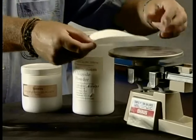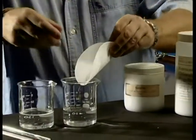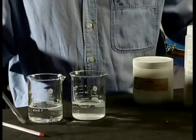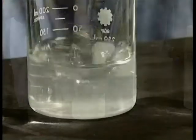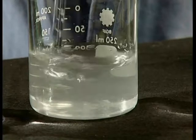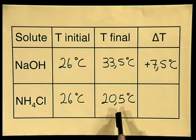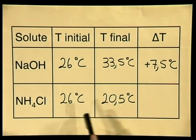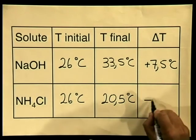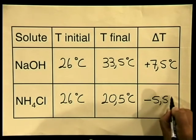The question is, is heat energy always released when a solute dissolves in a solvent? Let's see what happens with our other solute. We now add ammonium chloride to the water and stir the solution with a glass rod. The solute has all dissolved. What is the final temperature? The final temperature is 20.5 degrees Celsius. So in this case, the change in temperature is minus 5.5 degrees Celsius.